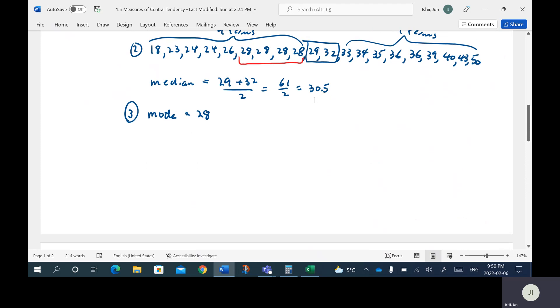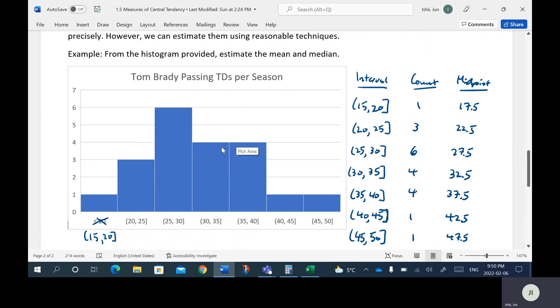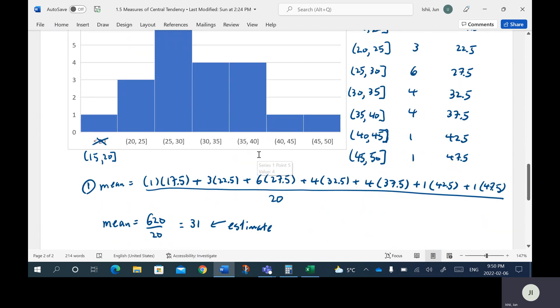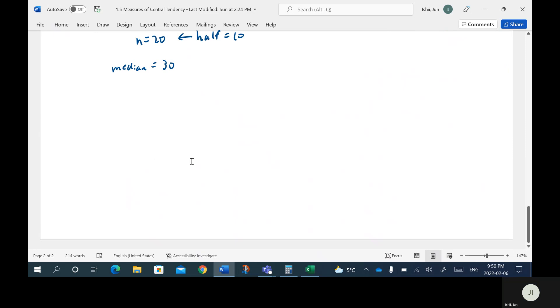Now what it was for real or it actually was was 30.5. So again, it's a very close, very close estimation. So that's what you do with group data. You can't get the precise answers. However, you can actually estimate the mean and the median. Cool, guys. So that is it. So that's the measures of central tendency.